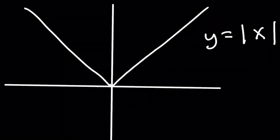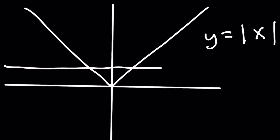Now that we've talked about the vertical line test, let's talk about the horizontal line test. The horizontal line test is used to test whether or not a function has an inverse function. If we take y equals the absolute value of x, we can draw a horizontal line parallel to the x-axis. If this line goes through more than one point, then the function does not have an inverse. So y equals the absolute value of x does not have an inverse function, because our line goes through more than one point.